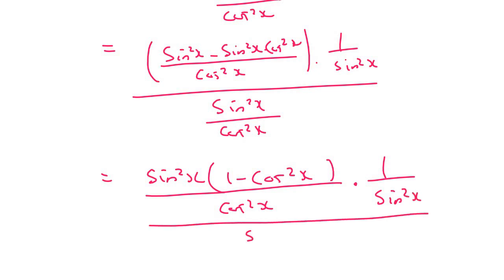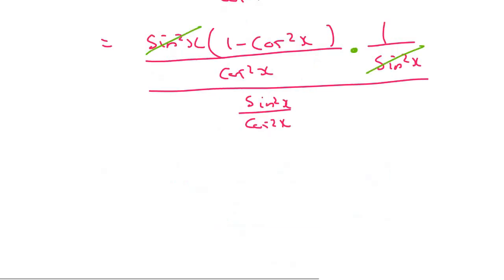That's all over sin²x over cos²x. These two can cancel because they are diagonally across each other. This is quite a long question. What we have now is 1 minus cos²x over cos²x, and at the bottom we still have sin²x over cos²x.